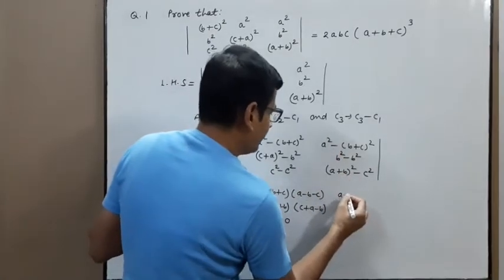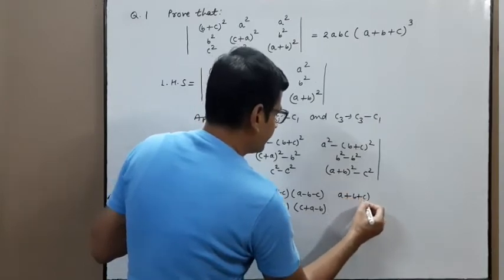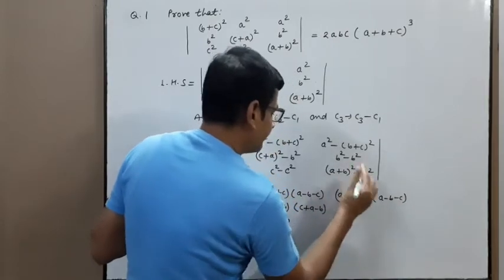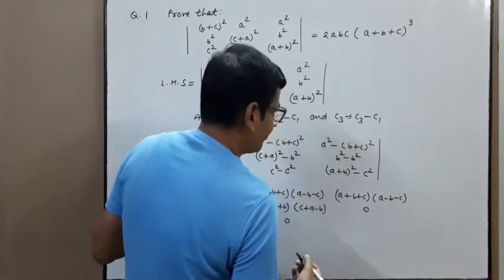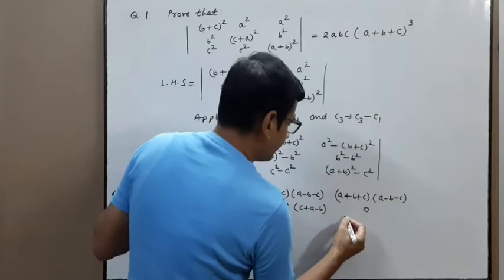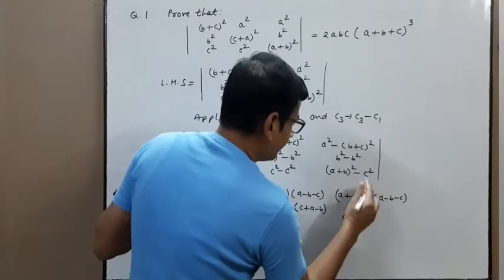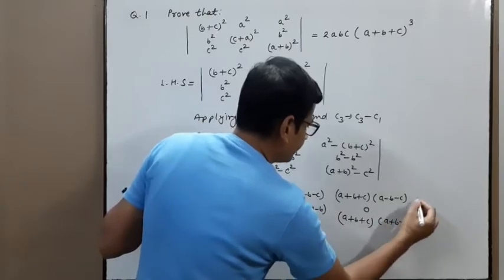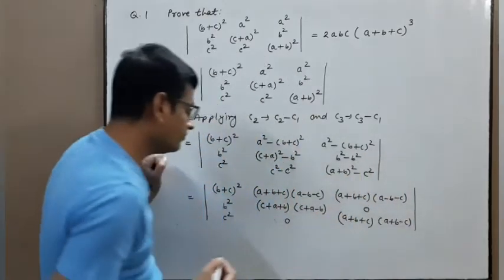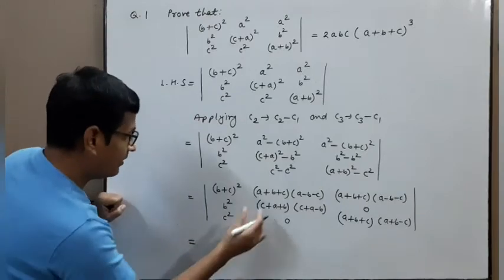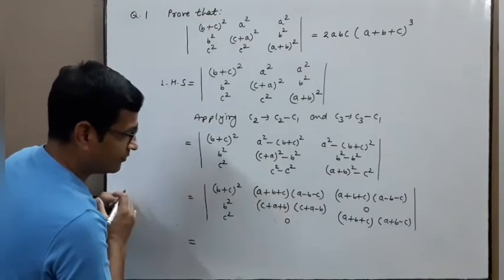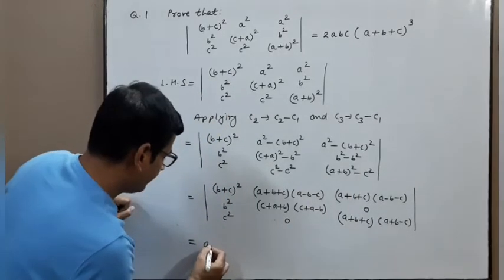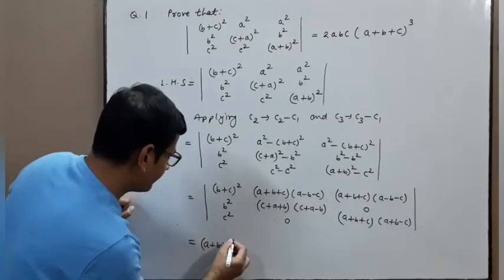Factor of this: (a+b+c)(a−b−c). This minus this gives zero, and (a+b+c)(a+b−c). Now taking common (a+b+c) from C2 and (a+b+c) from C3, so we extract (a+b+c)² outside the determinant.